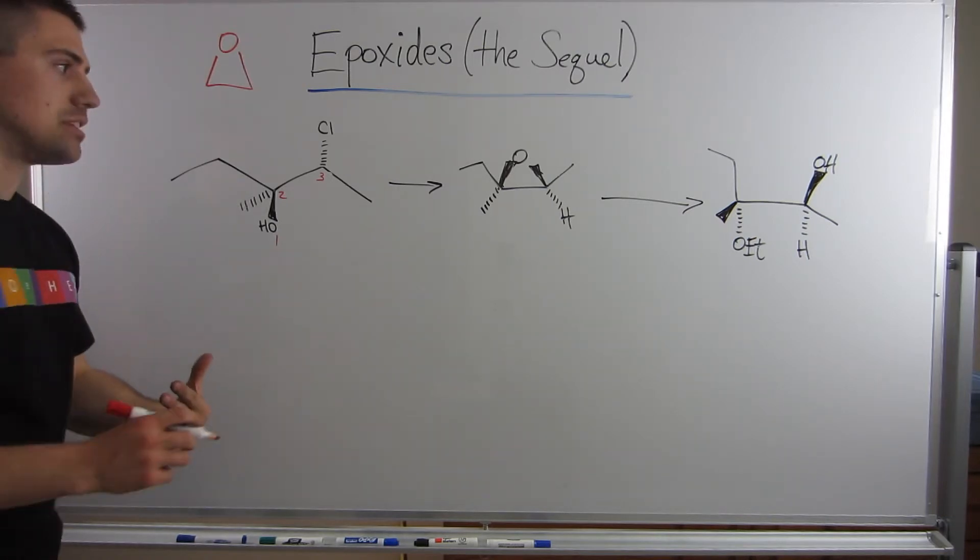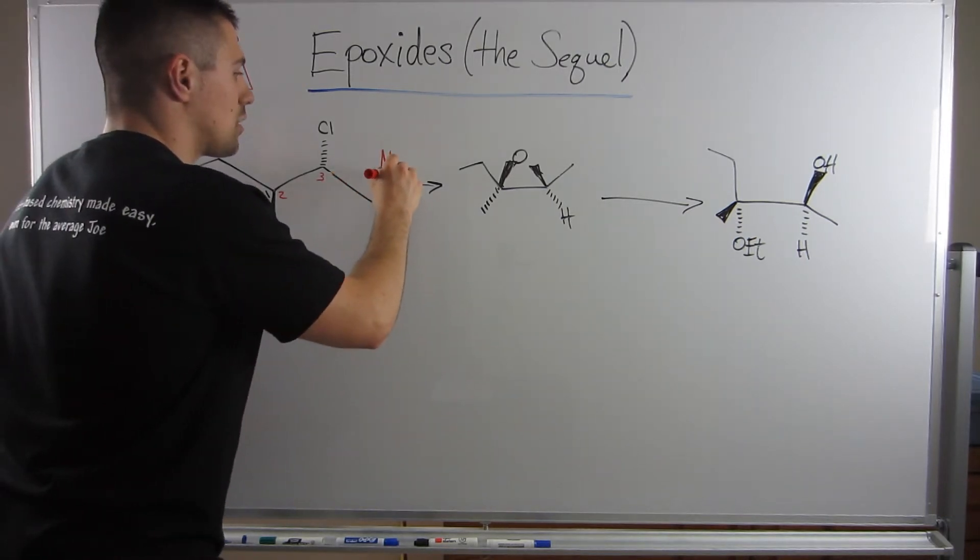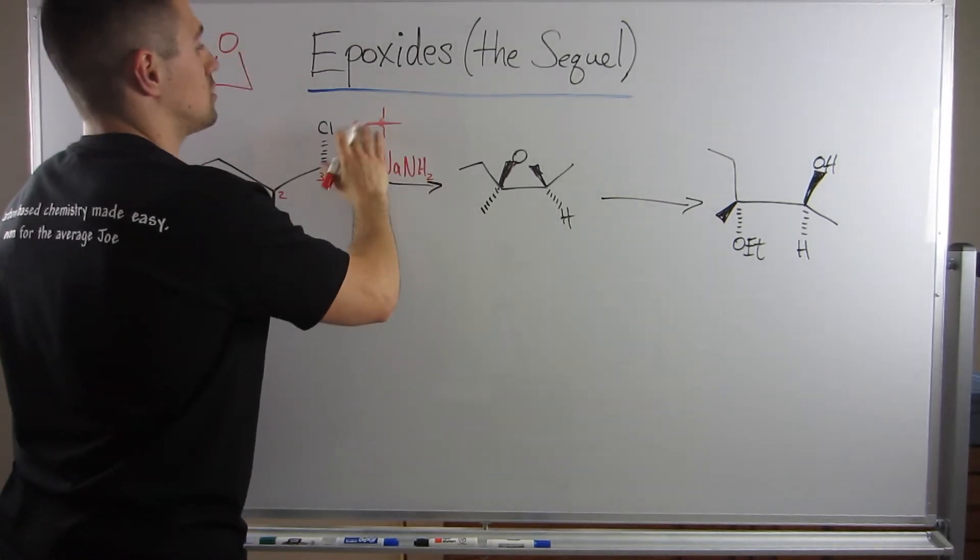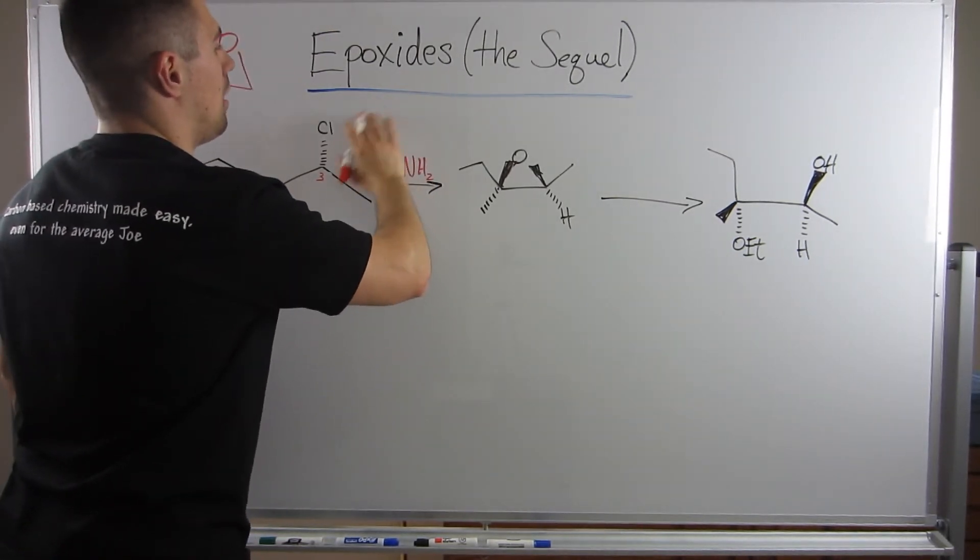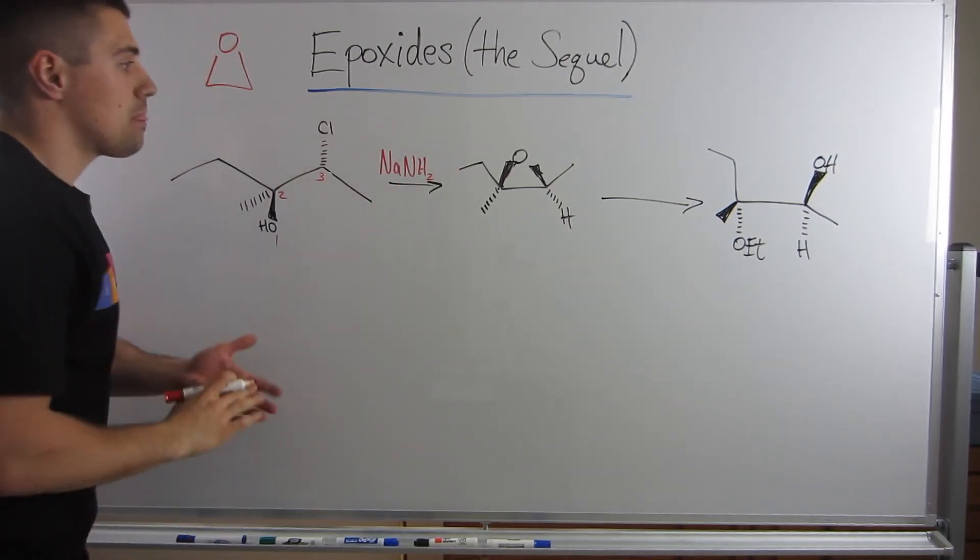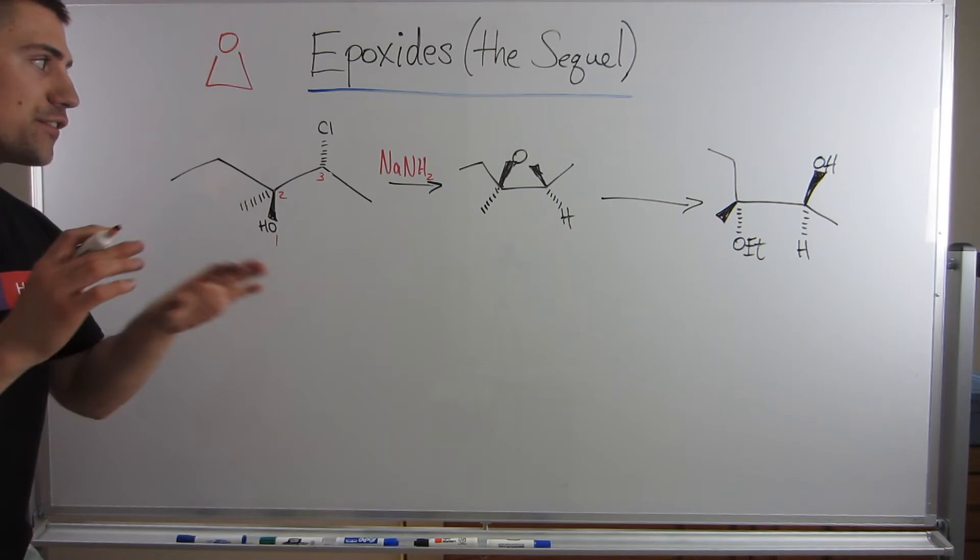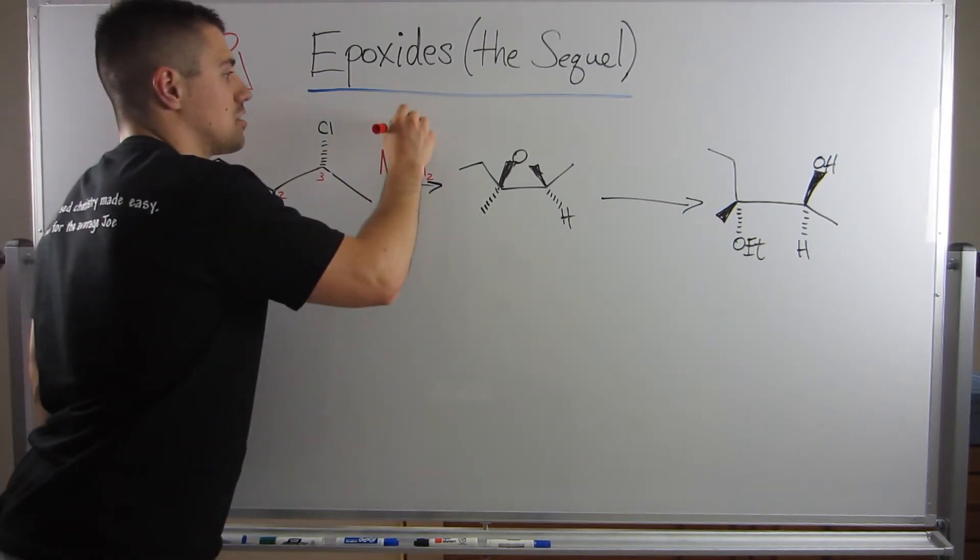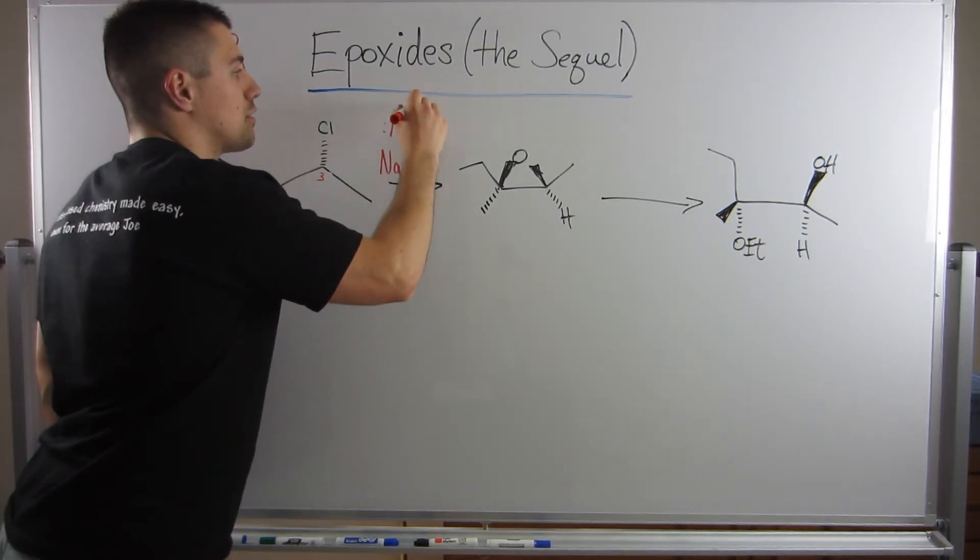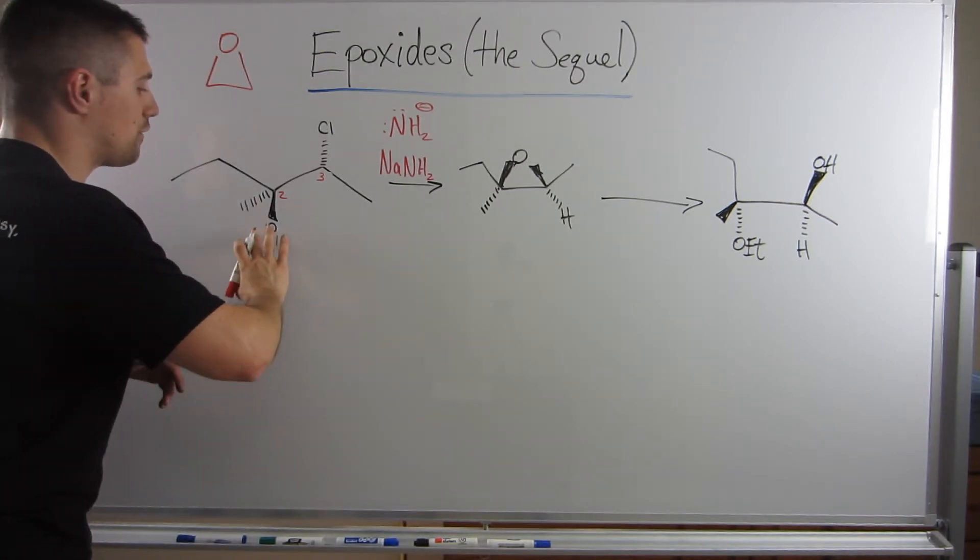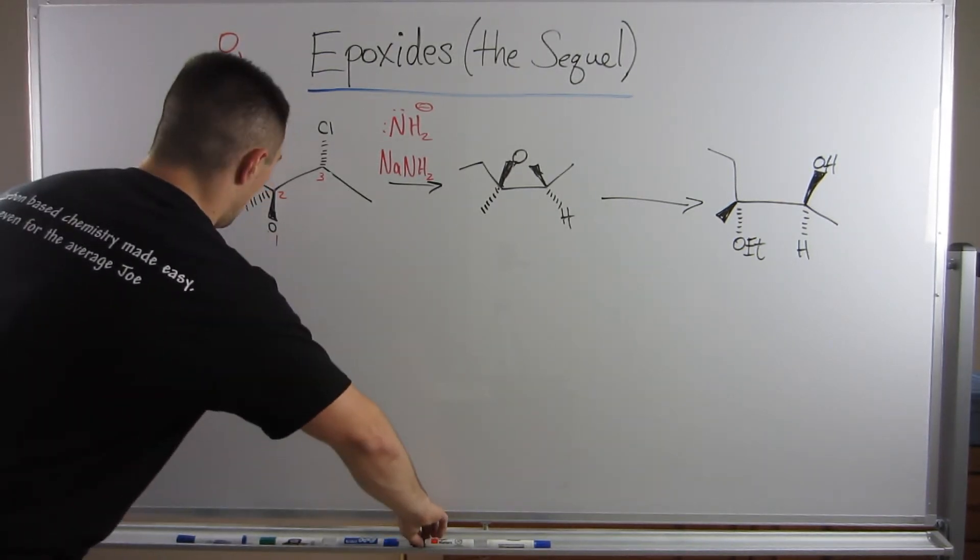So, the way we can make this happen is if we throw in a base. Let's say if we throw in, like, some NaNH2 or even some, oh, actually, just kidding. Don't do that. So, some NaNH2. The first thing that's going to happen is a quick acid-base reaction. That's the very first thing that this NH2- is going to want to do because they're very quick. They're very exothermic. What that's going to do is that's going to rip an H off of this oxygen. I'll even just draw it out.